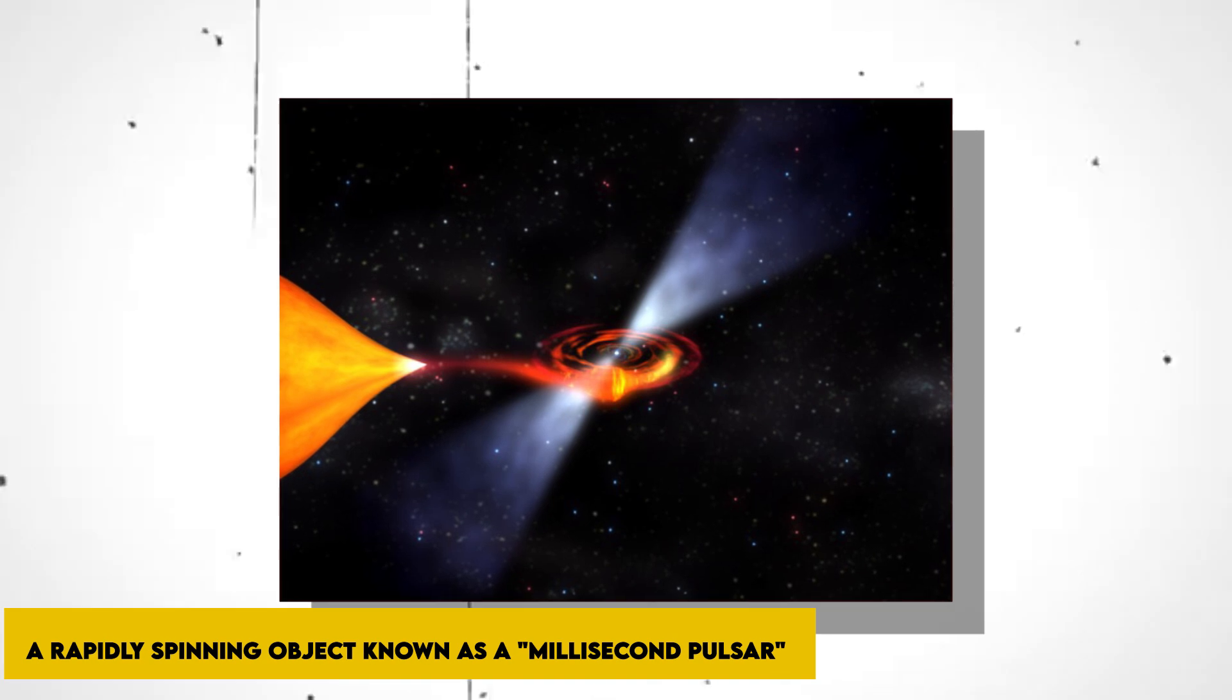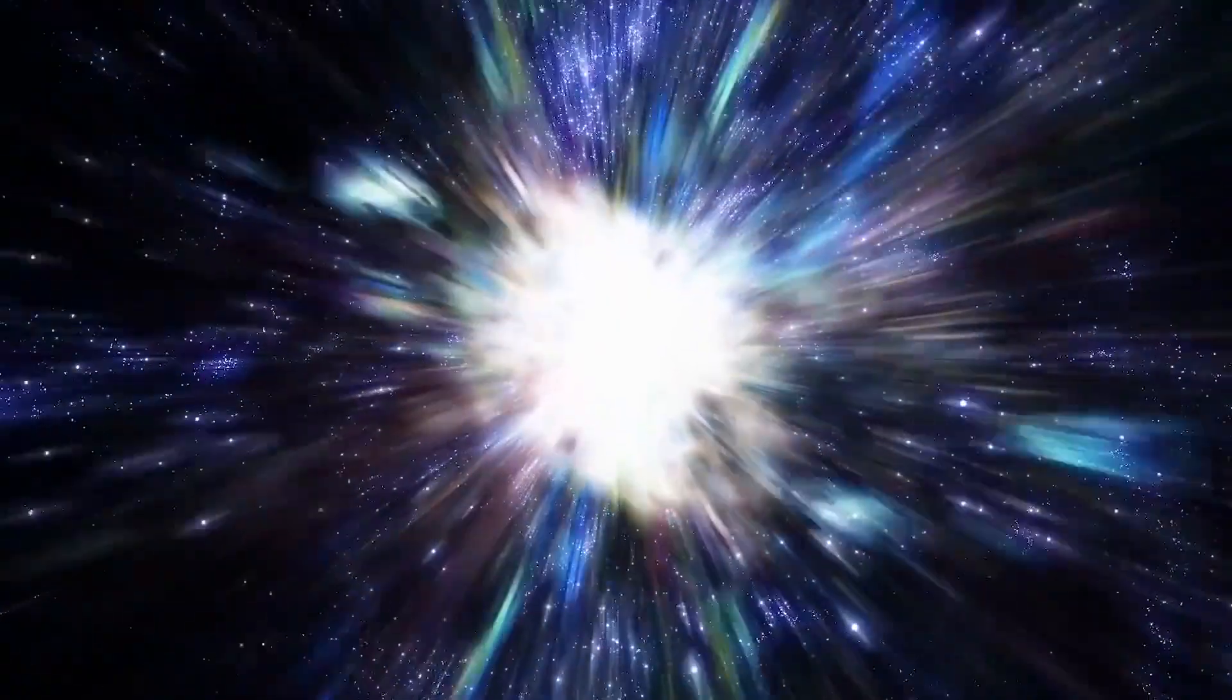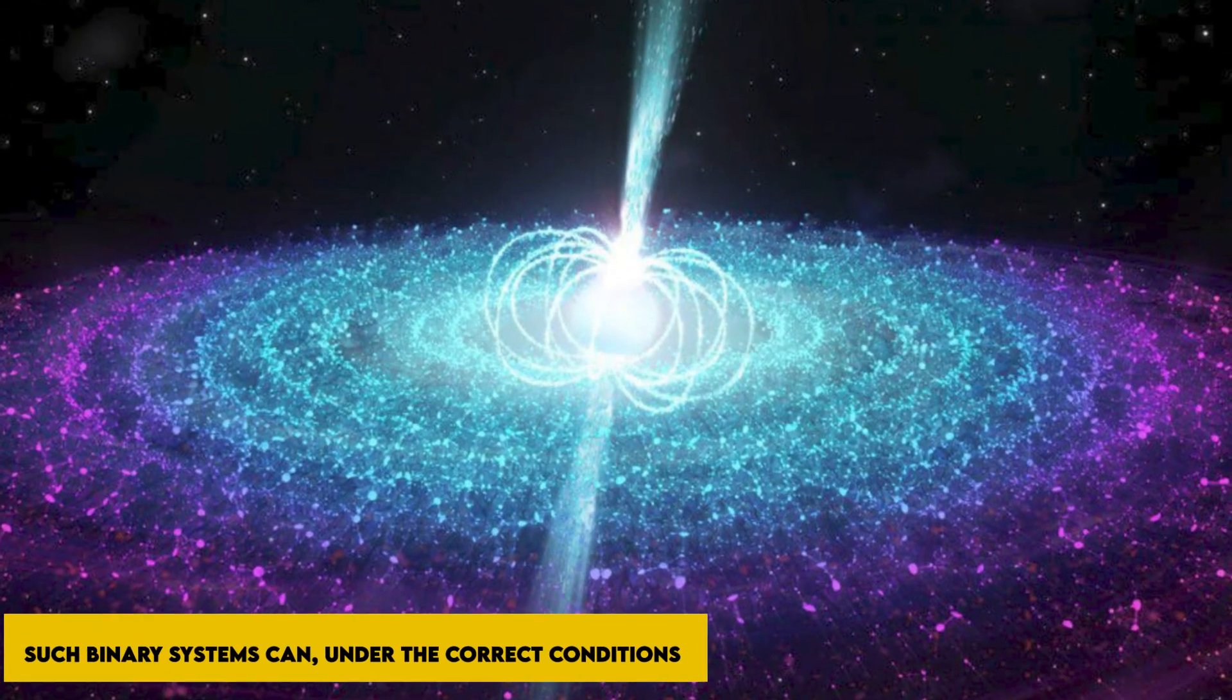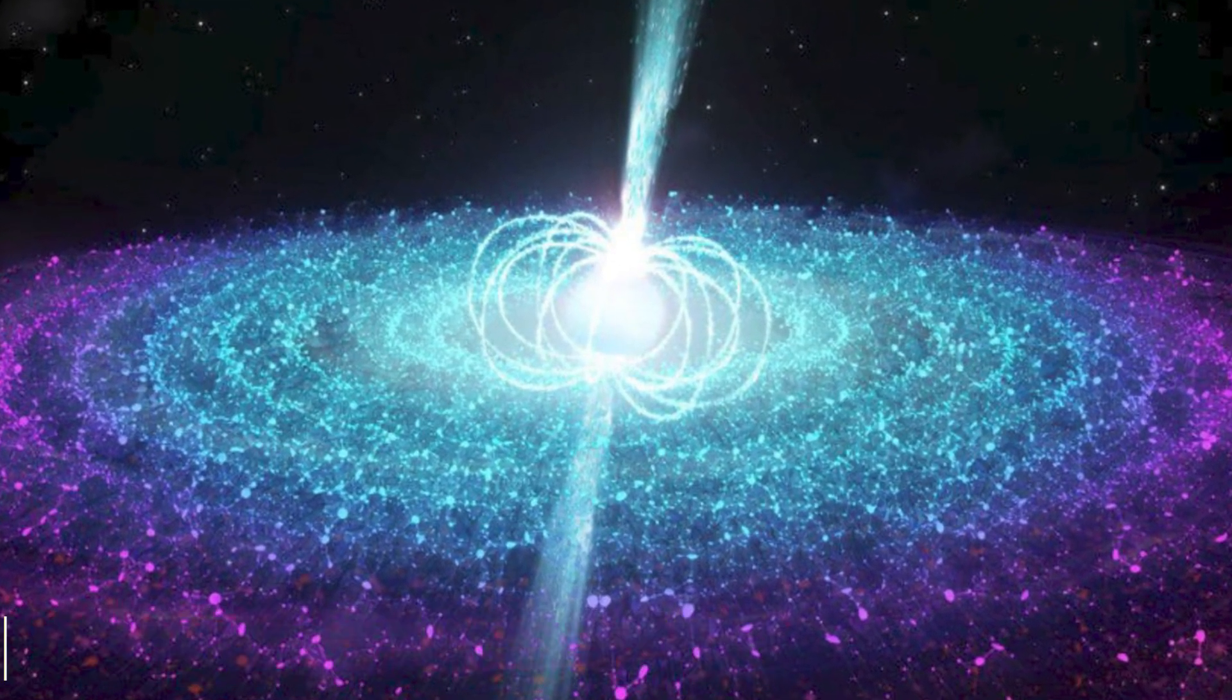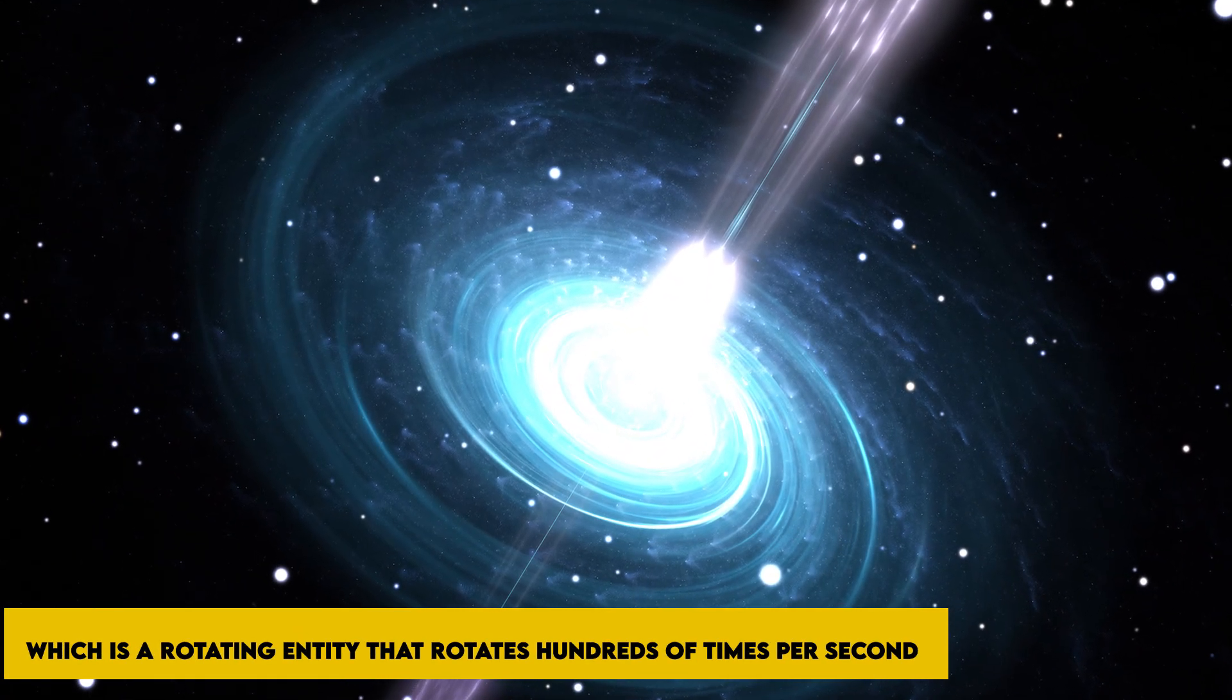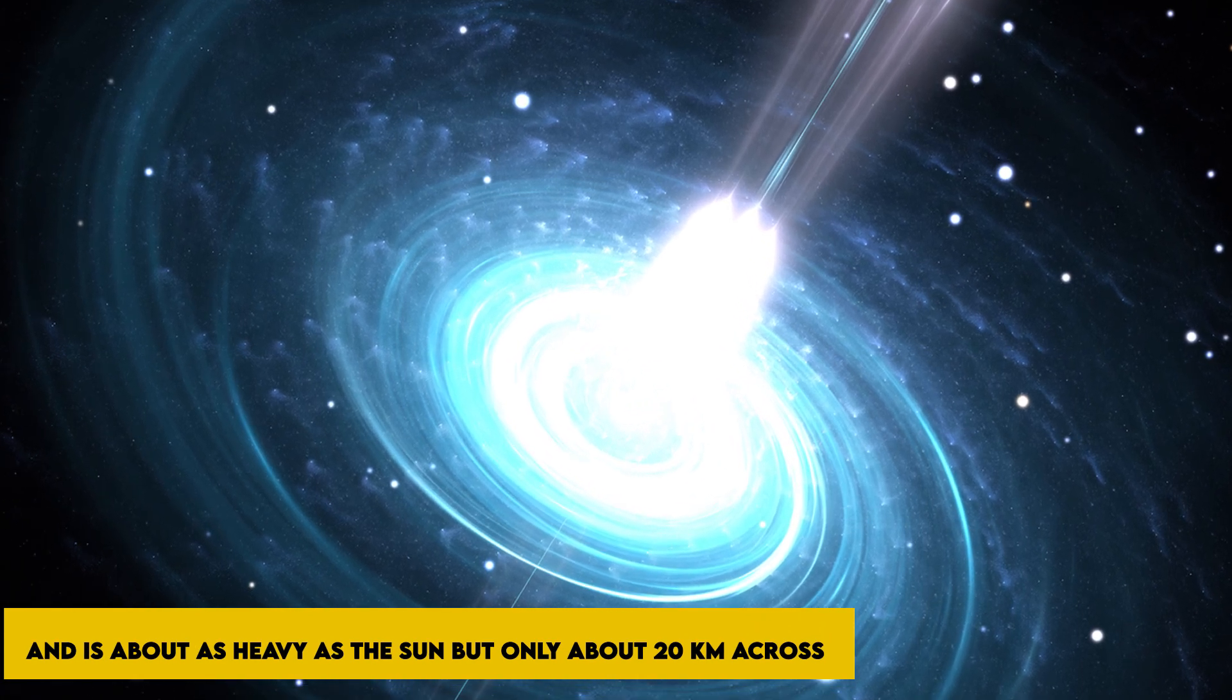A rapidly spinning object known as a millisecond pulsar, which is the remnant of specific stars that are significantly more massive than the Sun and are also closely orbiting another star, is the only explanation, according to astronomers who are confident that this is the only possible explanation. Such binary systems can, under the correct conditions, give birth to a neutron star, which is a rotating entity that rotates hundreds of times per second and is about as heavy as the Sun, but only about 20 kilometers across.